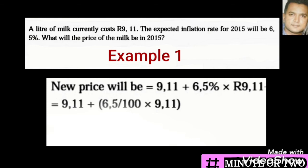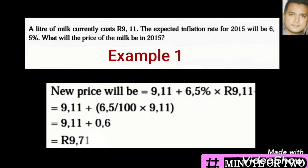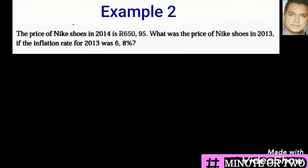The part where we need to find the percentage is placed within the bracket, and then we add this on to the R9.11. It's important to show every step. The 0.065 is shown as part of our working and can earn you marks in your exams for simplification. Showing your steps can also give you an advantage in method marking. We finally arrive at R9.71.